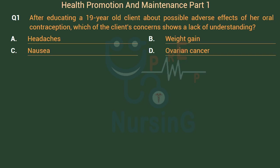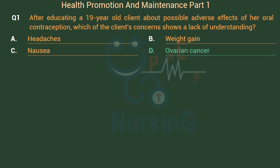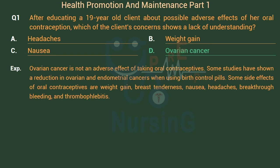The right answer is Option D: Ovarian Cancer. Ovarian cancer is not an adverse effect of taking oral contraceptives. Some studies have shown a reduction in ovarian and endometrial cancers when using birth control pills.